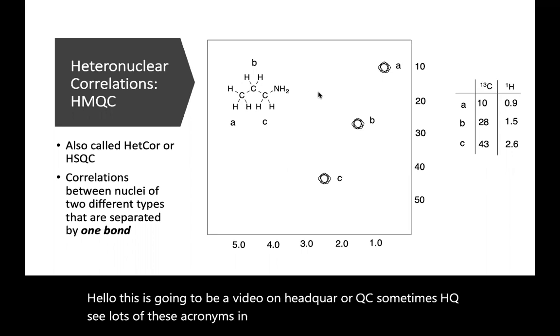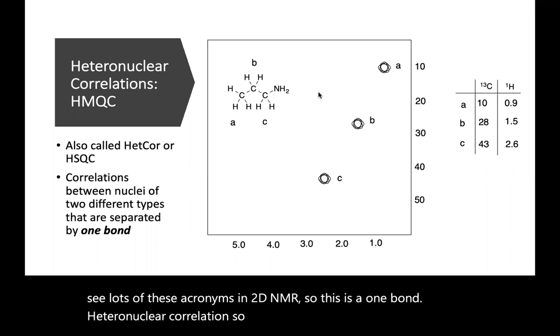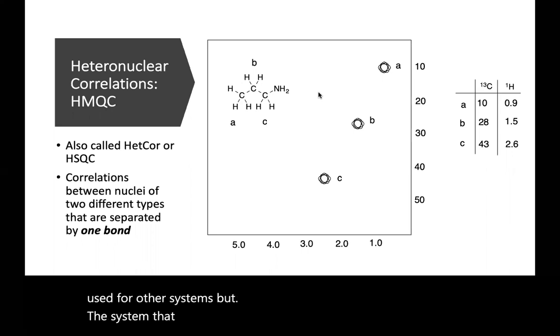So this is a one bond heteronuclear correlation. It can be used for other systems, but the system that we're going to see this semester is H to C, and it tells you exactly which proton is bonded to which carbon.